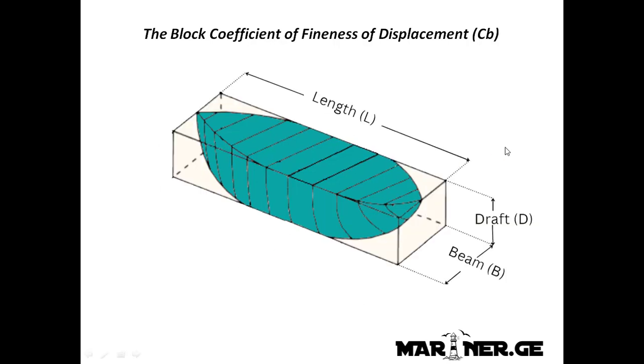If we take now this underwater part of the vessel and put it in a rectangular box shape with the same length, extreme breadth and draft as the vessel, then the block coefficient is the ratio of the volume of displacement to the volume of the box.